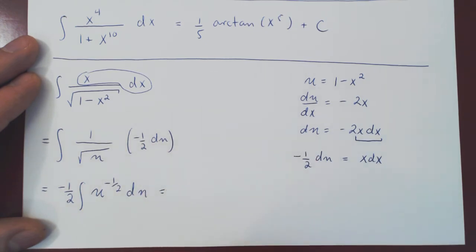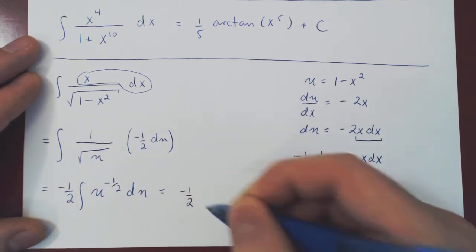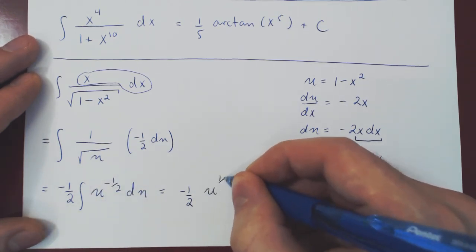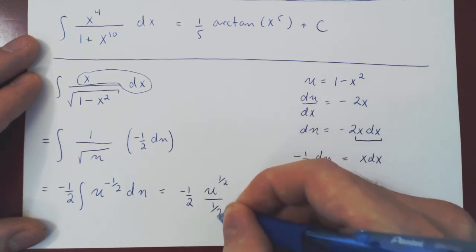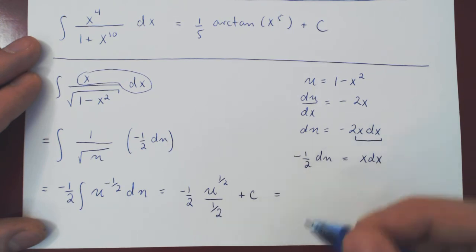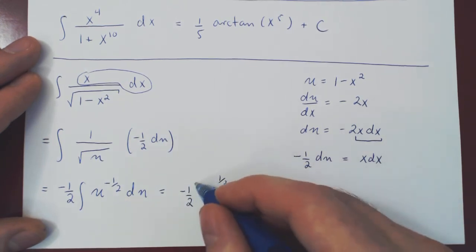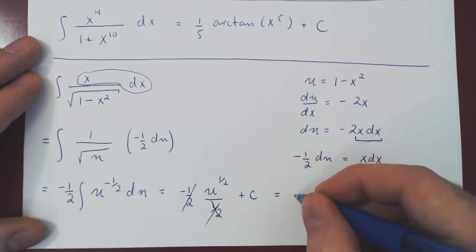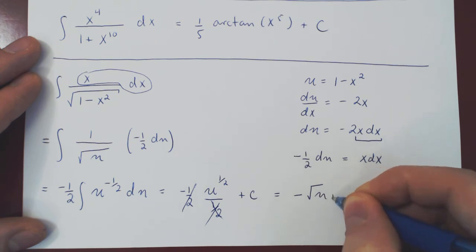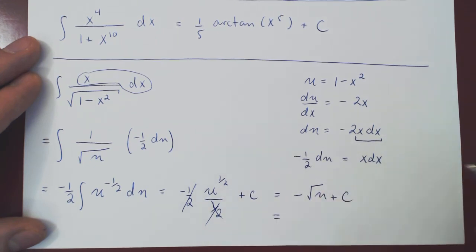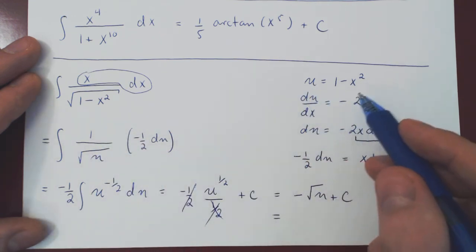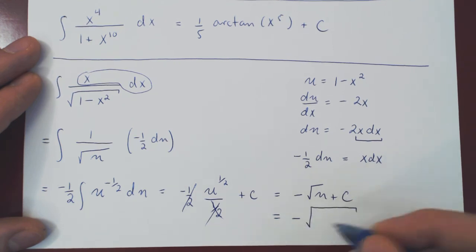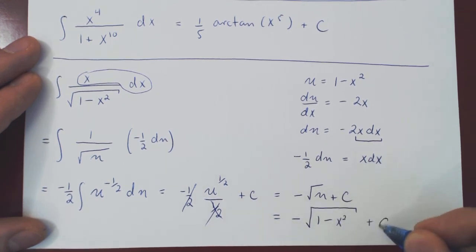And now we can use simply the power rule. Negative 1 half stays up front as a scalar multiple. Add negative 1 half plus 1 and you get positive 1 half. Divide by the new power of 1 half plus C. If you divide by a half, you multiply by 2, so they cancel each other. And you're left with negative u to the 1 half plus C. If you prefer, write the 1 half as root of u plus C. And finally, we want the final answer in terms of x. But u was 1 minus x squared, and so replace. And you get quite simply the negative of the square root of 1 minus x squared plus C.